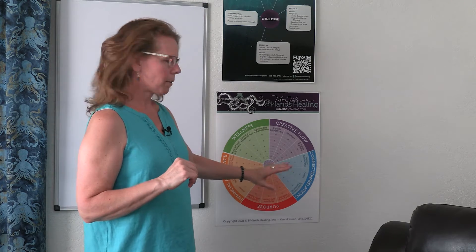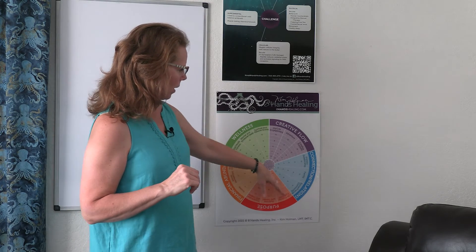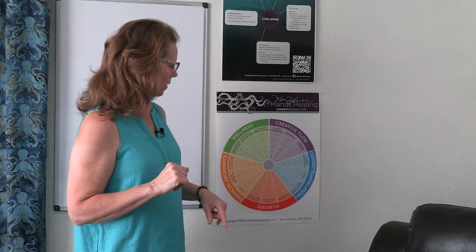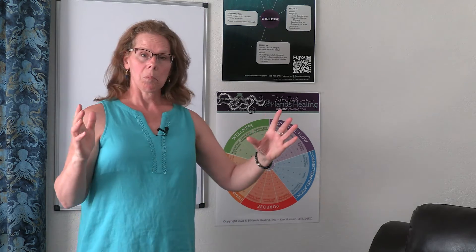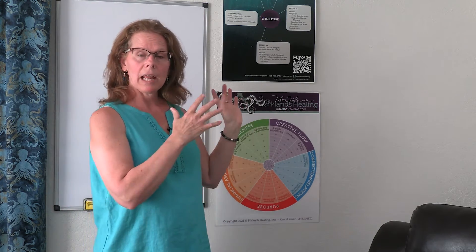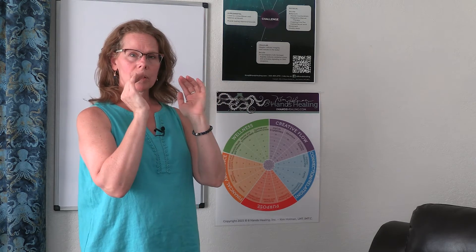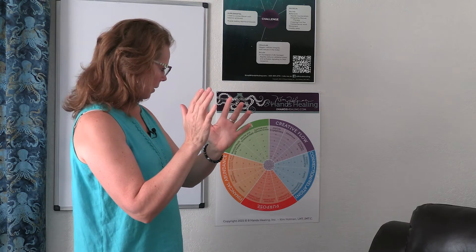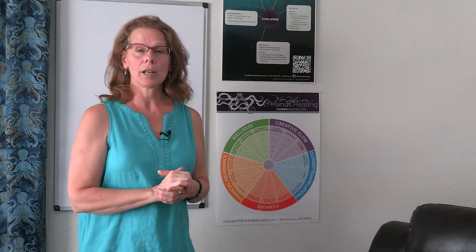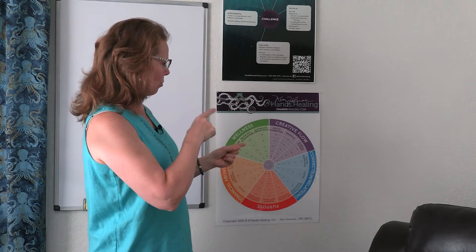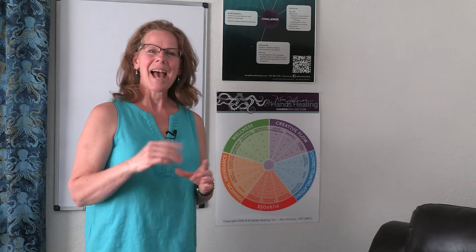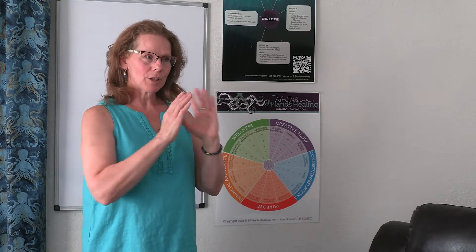About three months ago I was out of balance in the connection and relations category, and everything else was at 7, 8, 9, 10. So I turned my entire focus to connection and relations, and in two and a half months I've gone from a 2 to an 8. It's really fast when you turn your focus.